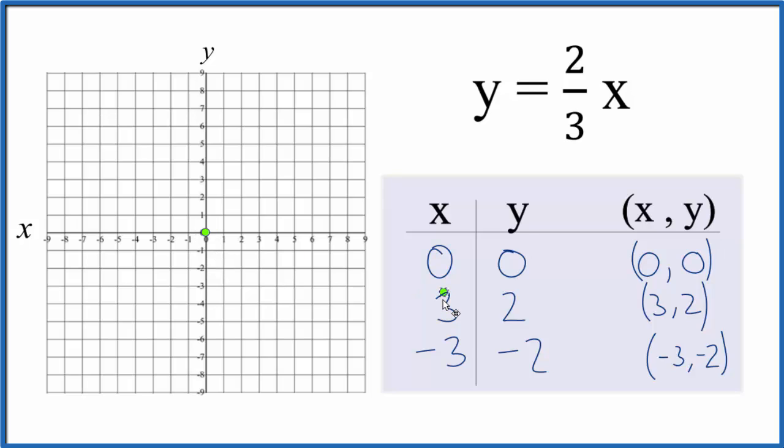Then we go to x is 3, y is 2. And we could stop there but it's nice to have a third point just to make sure we did these first two right. So we'll go x is negative 3 and y is negative 2. And there's our line. Let's put a line through that.